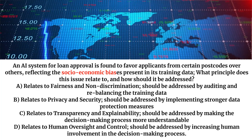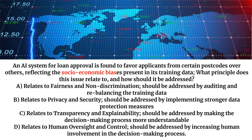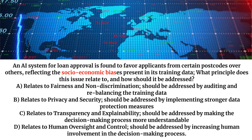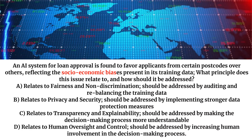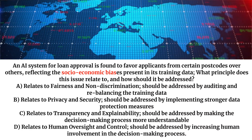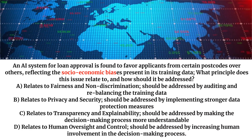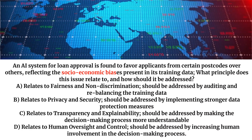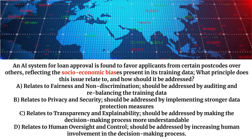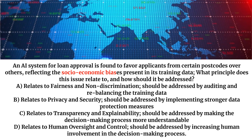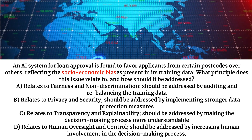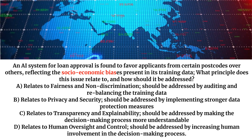An AI system for loan approval is found to favor applicants from certain postcodes over others, reflecting the socioeconomic biases present in its training data. What principle does this issue relate to, and how should it be addressed?